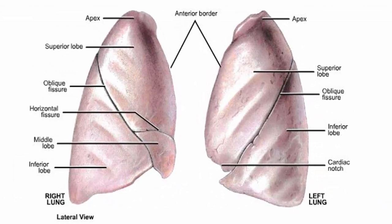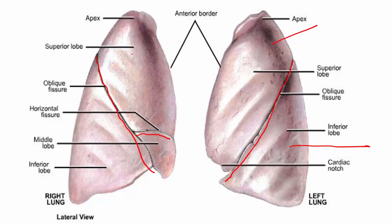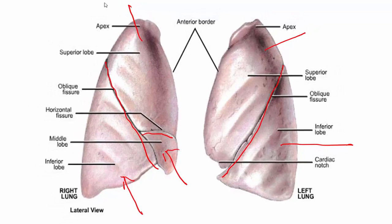This figure shows both lungs: this is the oblique fissure on the left lung only, and this is the oblique fissure and the horizontal fissure on the right lung. This is the superior lobe and this is the inferior lobe. This is the superior lobe of the right lung, this is the inferior lobe of the right lung, and this is the middle lobe on the right lung only.